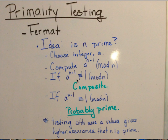If this number a to the n minus 1 is not equal to 1 mod n, then n is composite. If a to the n minus 1 is congruent to 1 mod n, then it's probably prime.